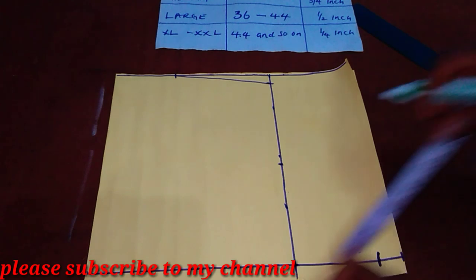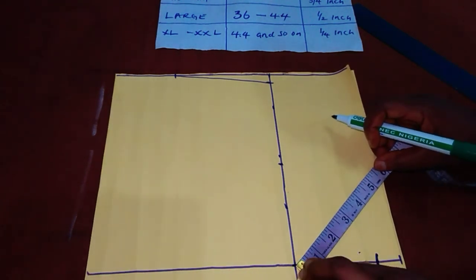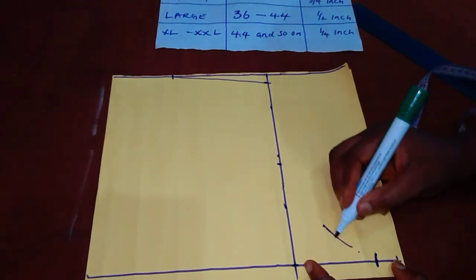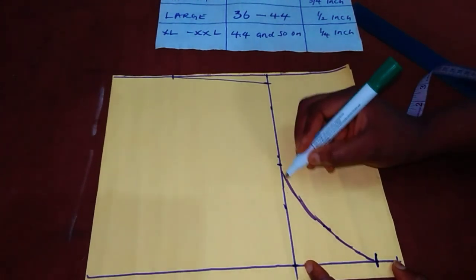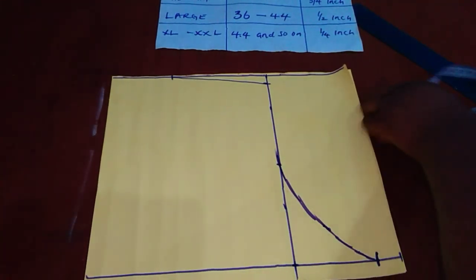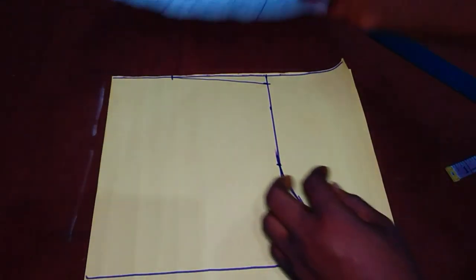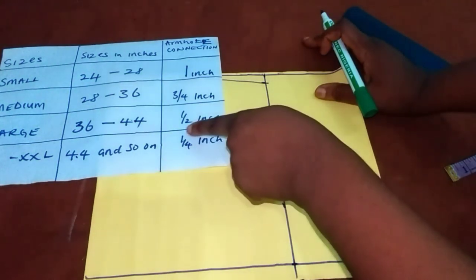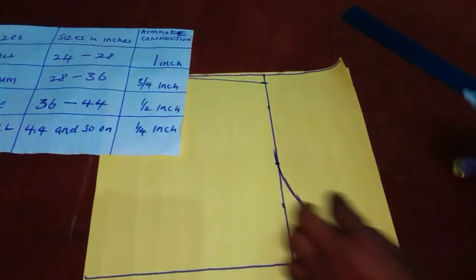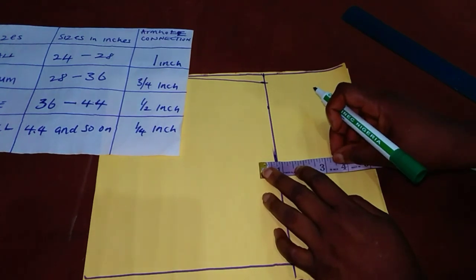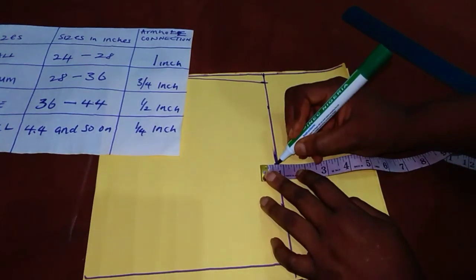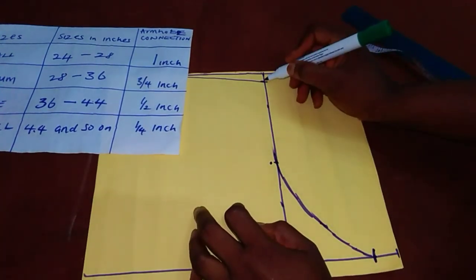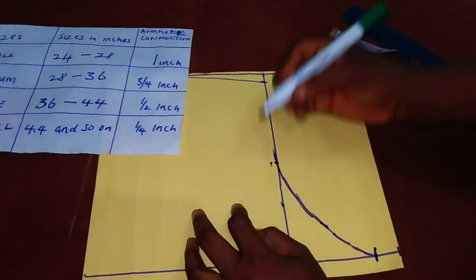The next thing should be to connect the midpoint to the actual bust measurement, not to the allowance. Now, this is our actual bust measurement. All you need is to connect this one to our midpoint. Now, if you don't have a French curve, just move in by 2 inches from this angle 90. And then connect. Now, this is for the back.